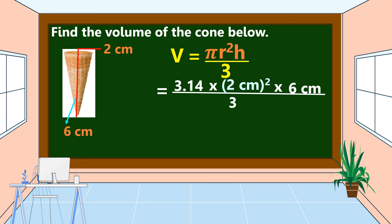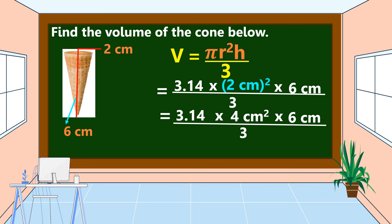Let's solve. First, the number inside the parentheses with an exponent: 2 cm × 2 cm = 4 cm². Then bring down 3.14 × 6 cm ÷ 3. Next, multiply 4 cm² × 6 cm = 24 cm³. Times 3.14, the product is 75.36 cm³, divided by 3. The volume of this cone is equal to 25.12 cubic centimeters.